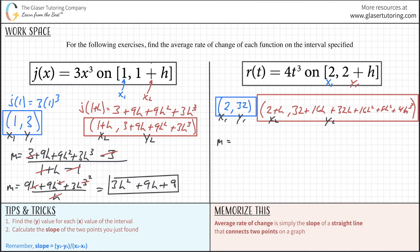The slope equals the y2 value (32 plus 48h plus 24h squared plus 4h cubed) minus y1 of 32, all over x2 value of 2 plus h minus x1 value of 2. The 2s cancel and the 32s cancel.